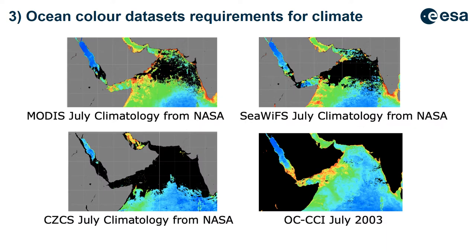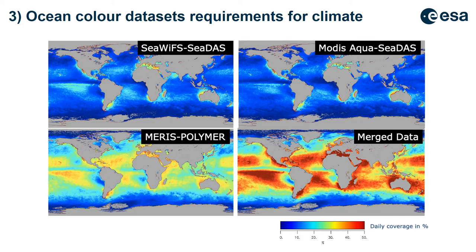This image illustrates how the coverage of the OC-CCI merged product is much better than many individual sensors, particularly for certain regions like the Red Sea and the Gulf of Aden, where it has traditionally been very hard to collect ocean colour observations owing to atmospheric complexities. The merged product achieves much better coverage. Daily coverage across different platforms shows the merged ocean colour product achieving around 50% daily coverage over many ocean regions.